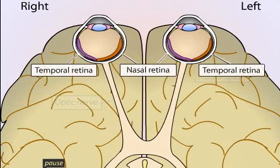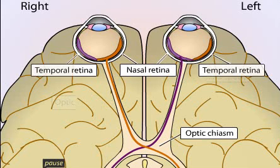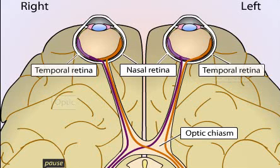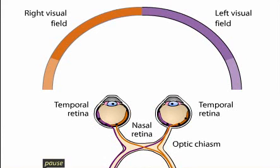The optic nerves cross at the optic chiasm, which is located just anterior to the stalk of the pituitary gland. In humans, axons from the nasal retina cross over to the opposite side of the brain, while axons from the temporal retina project to their own side of the brain. After they pass the optic chiasm, the axons of the retinal ganglion cells are known collectively as the optic tract. Note that information from the left visual field is carried in the right optic tract, and information from the right visual field is carried in the left optic tract.